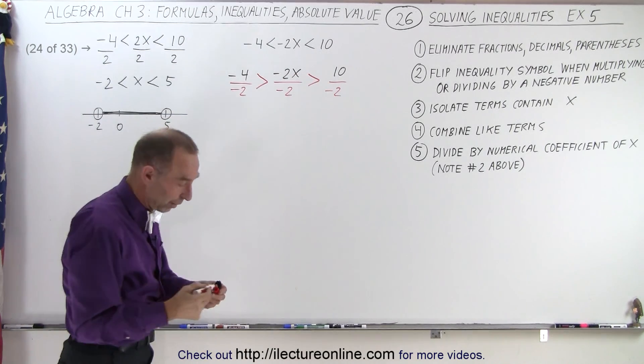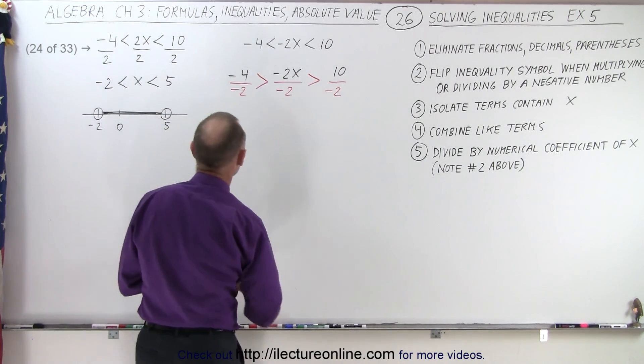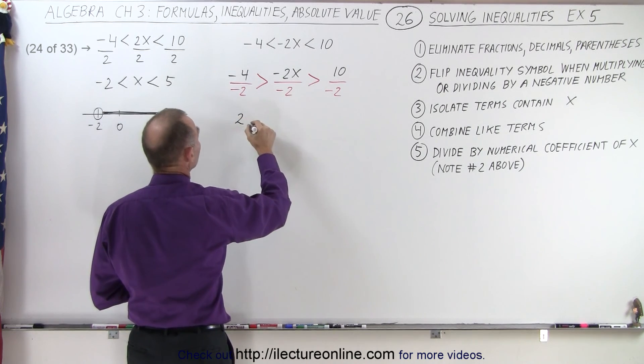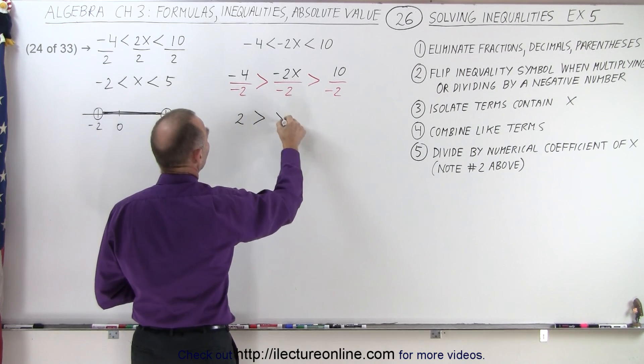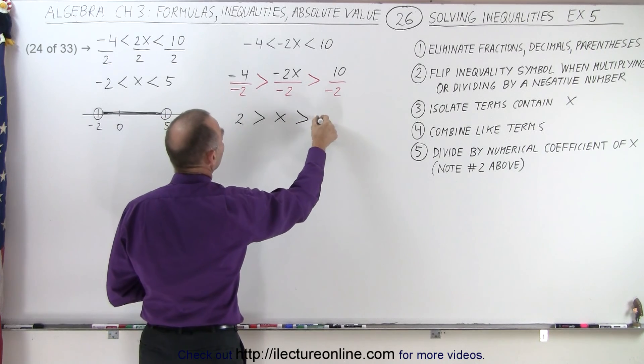Now we can solve the rest of the problem. So first, negative 4 divided by negative 2 is a positive 2. It's greater than x, which is greater than a negative 5.